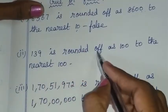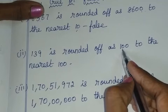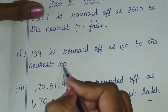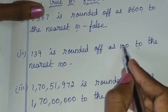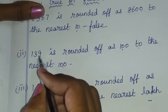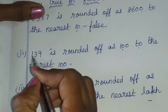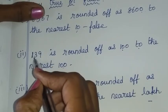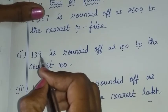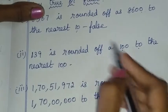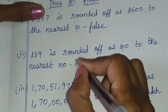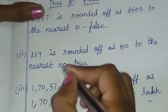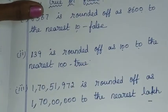139 is rounded off as 100 to the nearest 100. The hundreds around 139 are 100 and 200. We check 39 — it is less than 50, so we round down. 100 is correct. It is true.